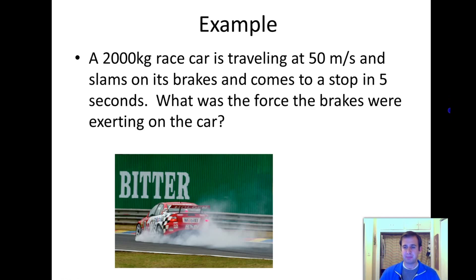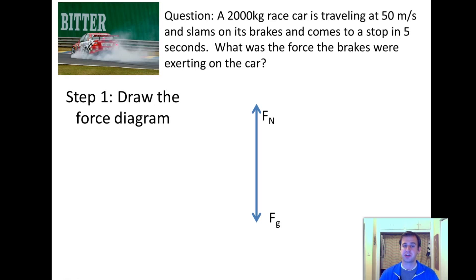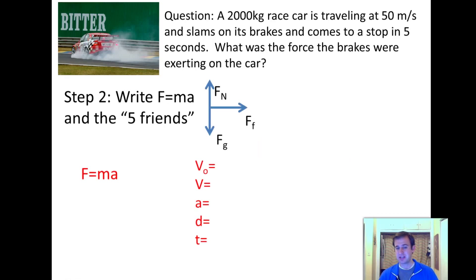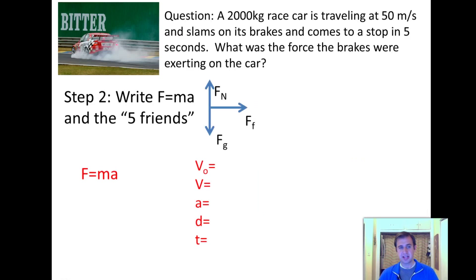Step one: draw the force diagram. We have the force of gravity pulling down on the car, the normal force pushing up, friction pulling us backwards, and nothing pulling us forward — the car slammed on the brakes, so it's not accelerating forward anymore. Step two: write down F = MA and our five friends, V0, V, A, D, T.